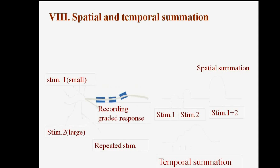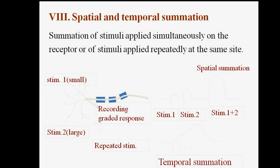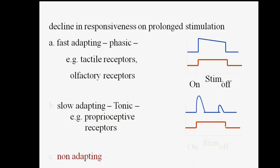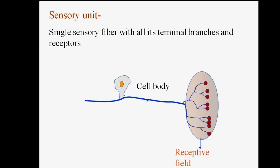This figure shows spatial and temporal summation — the summation of stimuli applied simultaneously on the receptor, or of stimuli applied repeatedly at the same site. The decline in responsiveness on prolonged stimulation is called adaptation. There are two types of receptors based on this: fast adapting and slow adapting, also described as phasic or tonic receptors.